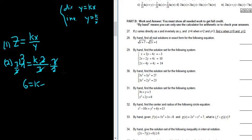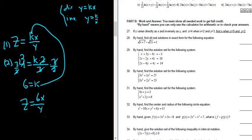Now that we have k, we plug it back into our formula. So z equals 6x over y. Step three is to find the answer, so I'll write the formula down again: z equals 6x over y.